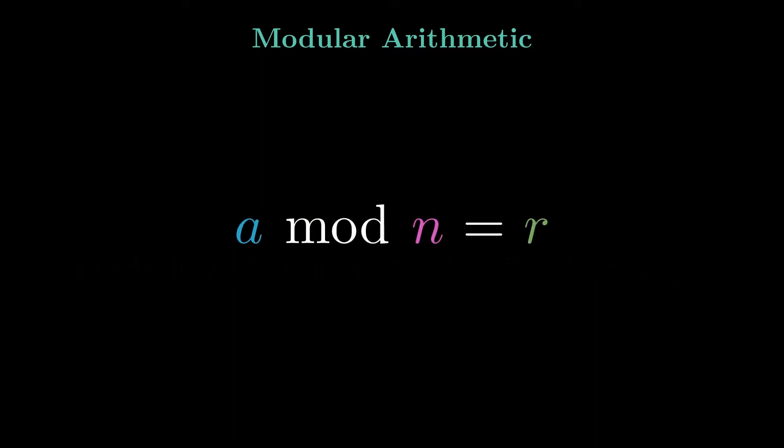This is different from saying a mod n without parentheses, which refers to the result of the modulo operation itself. A mod n without parentheses gives a unique integer r, such that r is between 0 and n, and r is congruent to a modulo n.